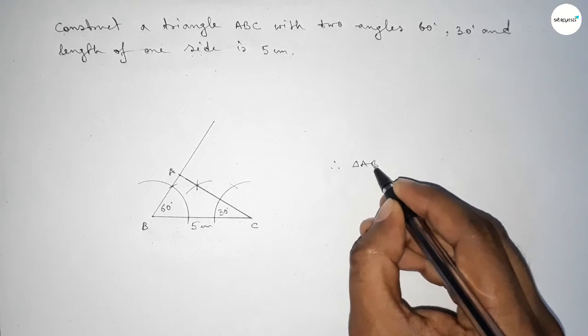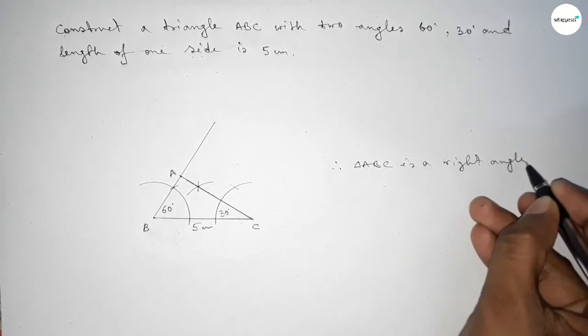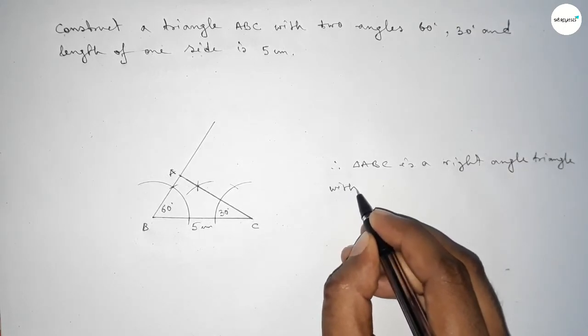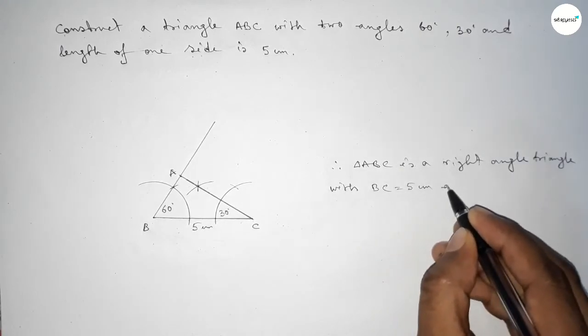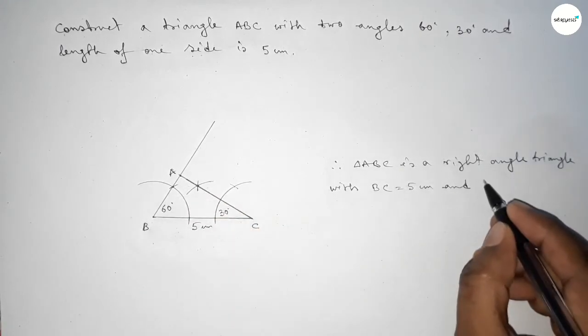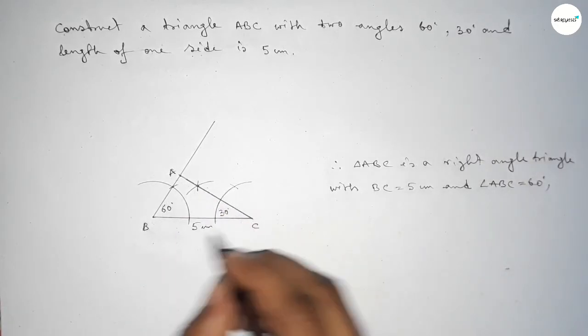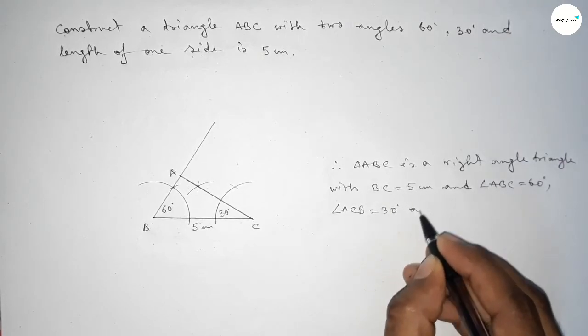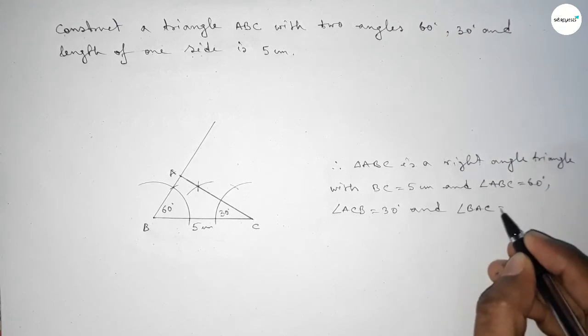Therefore triangle ABC is a right angle triangle with side BC equal to 5 centimeters, angle ABC equal to 60 degrees, angle ACB equal to 30 degrees, and angle BAC equal to 90 degrees. Since 60 plus 30 equals 90, and 90 plus 90 equals 180.